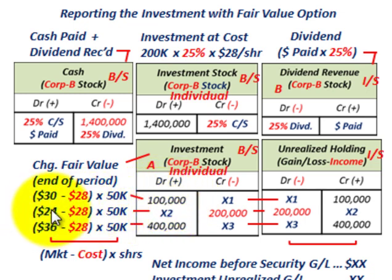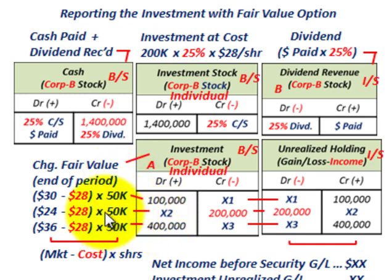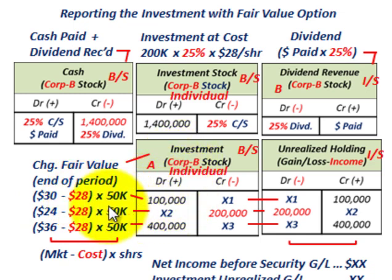For year two, the market price of $24 is less than the cost of $28, so the fair market value decreased — we credit or reduce the investment stock account by $200,000. For year three, the market price of $36 was greater than cost of $28, so we debit or increase our investment account. Any market price greater than cost increases the investment account; any market price less than cost decreases it.